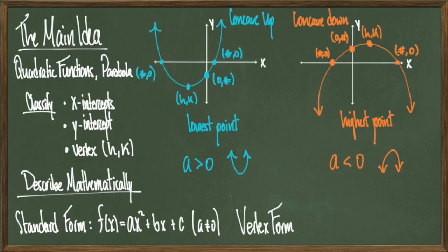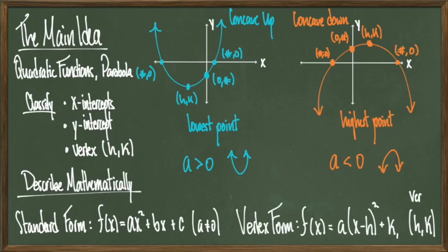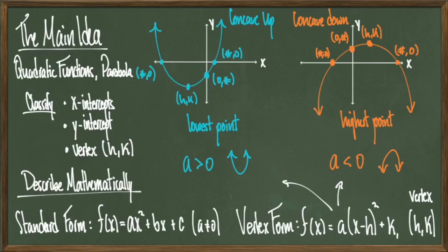The second form of quadratic functions is called vertex form, which looks like f(x) = a(x − h)² + k, and this just makes reading off the vertex much easier. Notice that there is a negative installed into the formula next to h, so the vertex's x-coordinate is always the opposite sign of how it's written in vertex form. For instance, if my vertex form had (x − 2)², then my vertex would have positive 2 as the x-coordinate. Notice that the a is still preserved, so if a is positive I'm concave up, and if a is negative then I'm concave down.